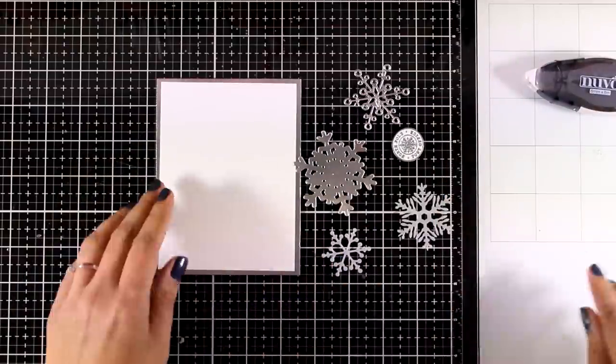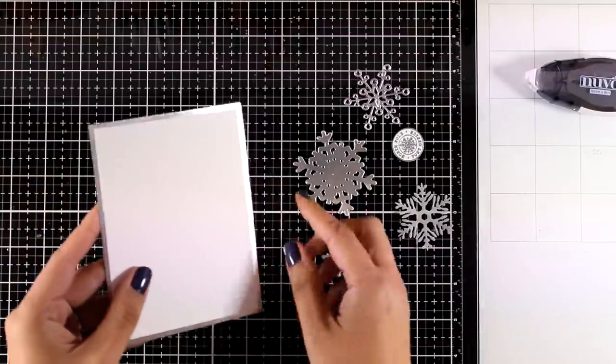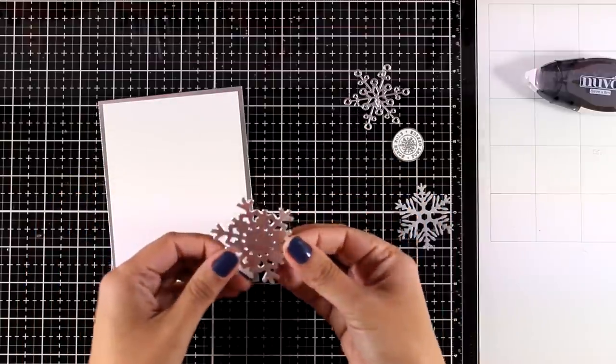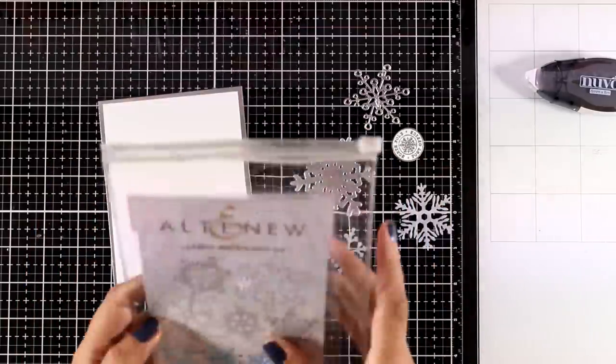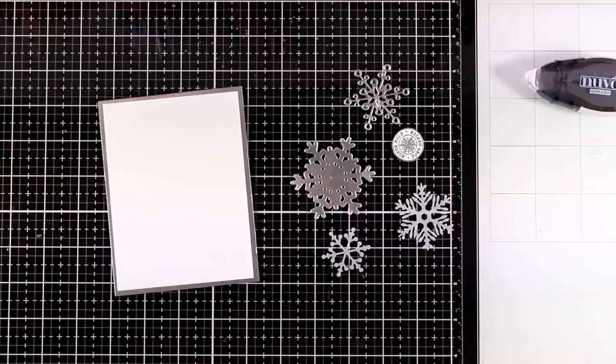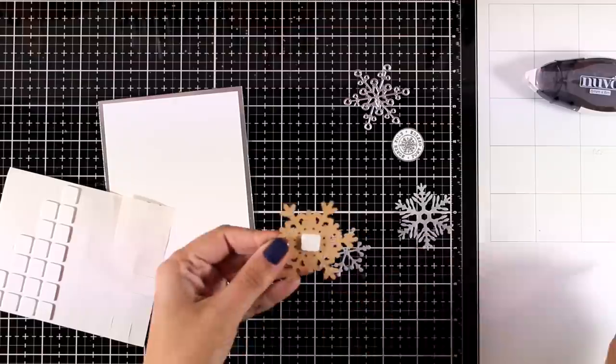Now as my focal point I'm going to use my snowflakes. These are cut out from the same silver cardstock and you can probably see the shine. Some of them are cut out of vellum and I use my favorite die set of snowflakes that I use again and again. I believe this is from last year but you will find linked down below.